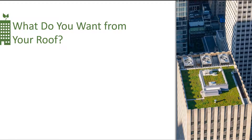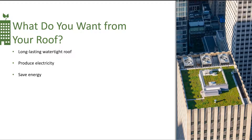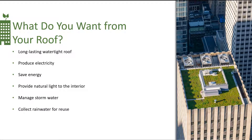So, let's think about rooftops. What do you want from your roof? Simply put, a roof must be designed to provide a long-lasting, watertight system. But we can consider additional uses for this space. Like adding PV solar, a roof can produce electricity. A roof can save energy by using cool roofs and green roofs. By installing daylight tubes and skylights, the roof can bring natural light into the interior. Roofs can be designed to manage stormwater and collect rainwater for reuse. Many roofs are designed to be aesthetically pleasing outdoor space for the building tenants, and even utilizing valuable rooftop space to create urban farms to grow food.